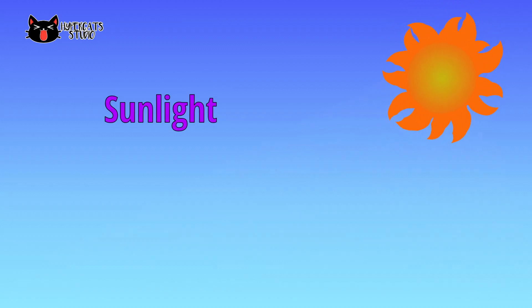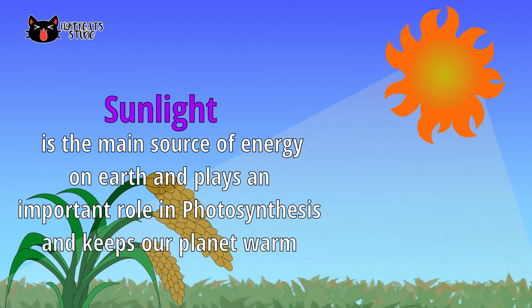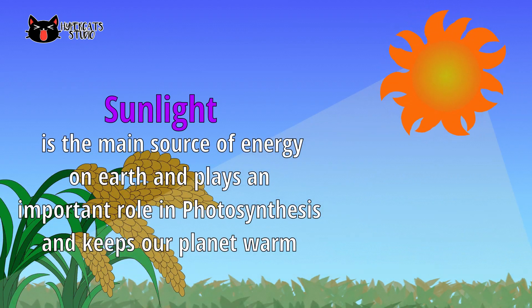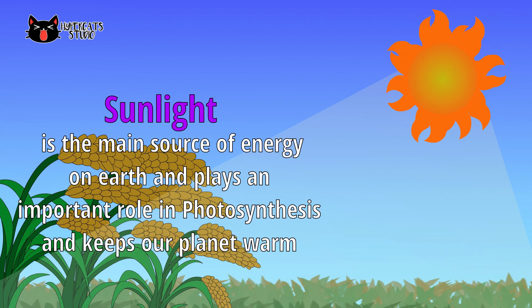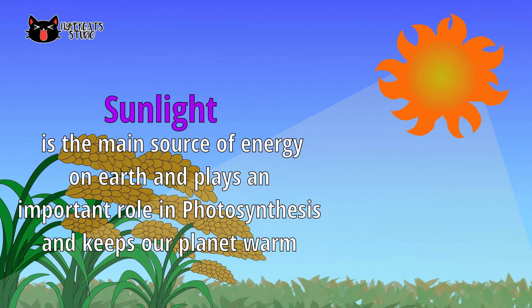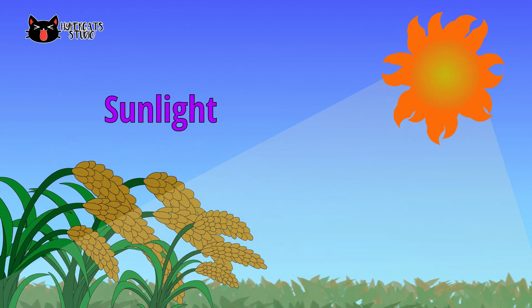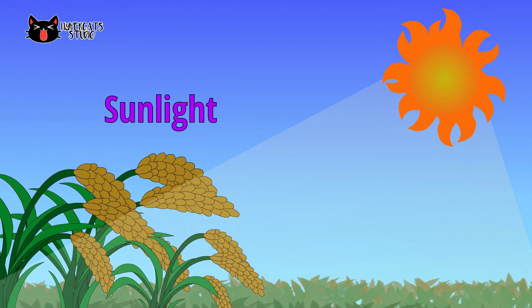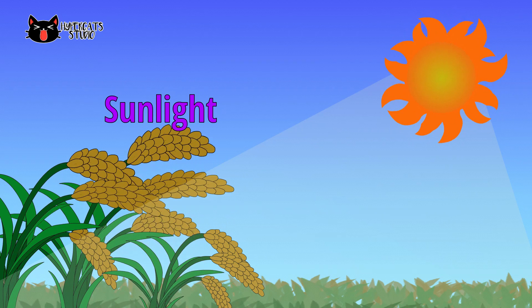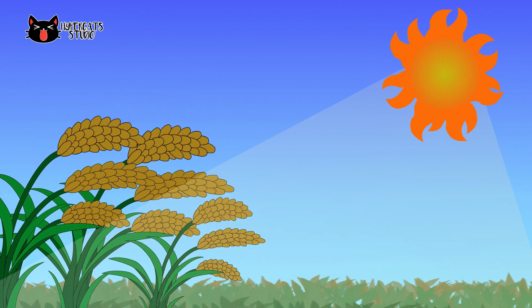Sunlight is another abiotic component. It is the main source of energy on Earth and plays an important role in photosynthesis. It keeps our planet warm. Without the sun, the Earth would be a lifeless ball of ice-coated rock.